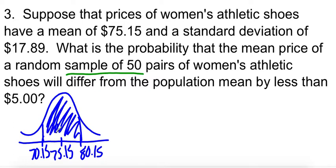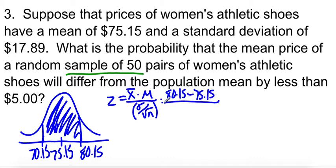If you're doing this one by hand, you're going to need two different Z-scores. Z is X-bar minus mu over sigma divided by root n. I'm going to do the upper one first. So 80.15 minus 75.15 over our standard deviation was 17.89 over root 50. We have 50 pairs of shoes. And that Z-score turns out to be 1.98.